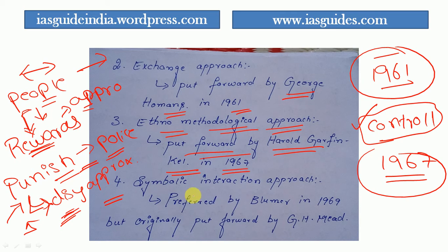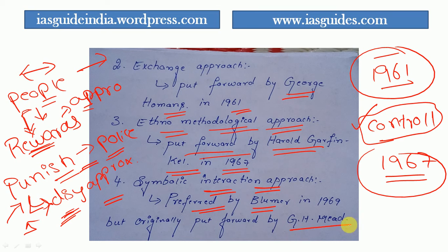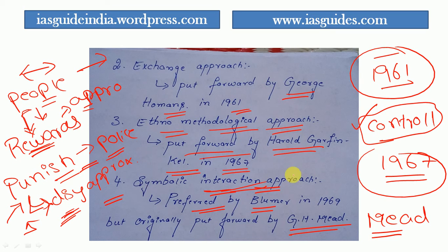The fourth approach is the symbolic interaction approach. It was preferred by Blumer but originally developed by George H. Mead. This is a very important approach — it has been asked in exams many times. According to this approach, interaction always involves interaction between people through symbols. Symbolic interaction is the interaction taking place between people through symbols — using symbols to communicate.